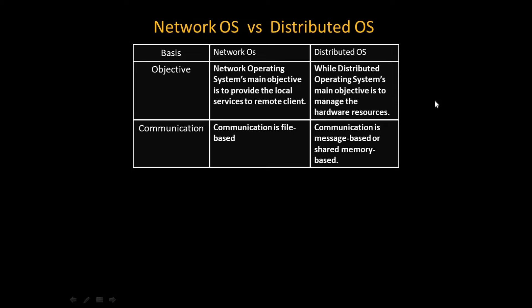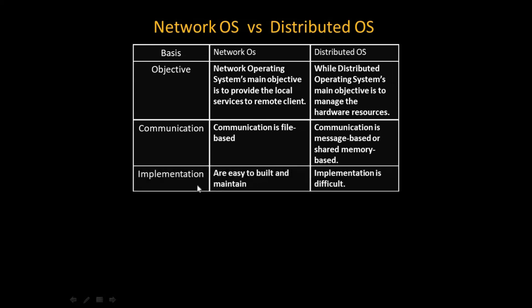On the basis of communication: in a network operating system, communication is file-based — via files, downloadable files, file sharing, and so on. In a distributed operating system, communication is message-based or shared memory-based, since the nodes share a common CPU and common hardware resource.